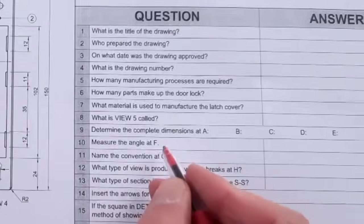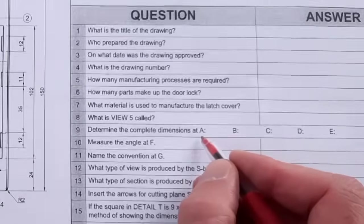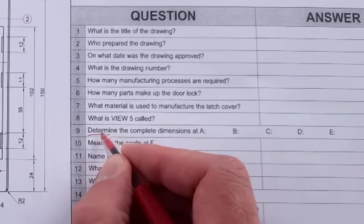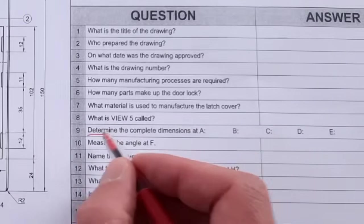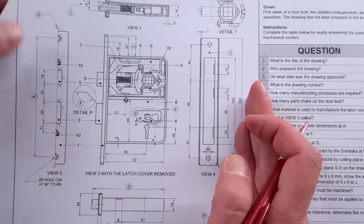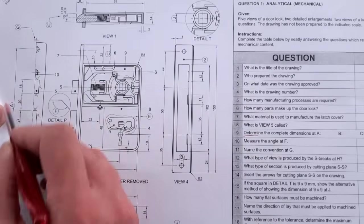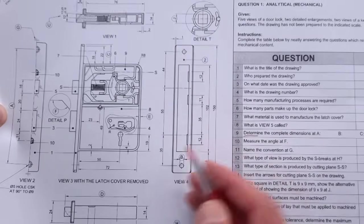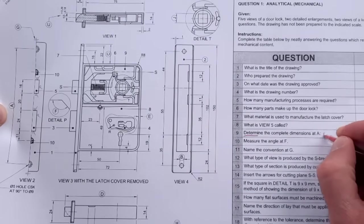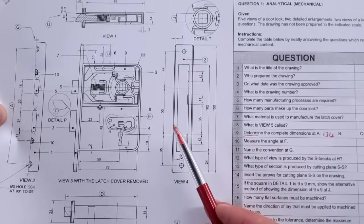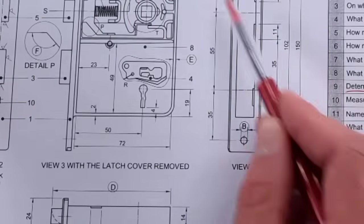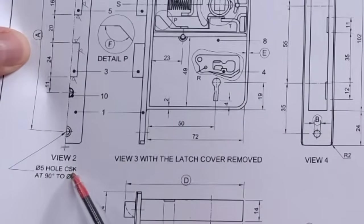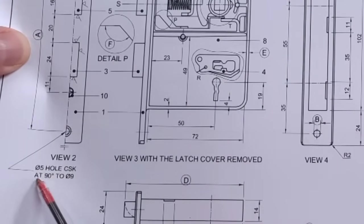Now determine the complete dimensions. Some learners then grab their rulers - do not do it. You have to determine it, not measure. Determine - in other words, you have to figure it out. And these measurements will be able, you will be able to determine. So let's look at A first of all. It's this big one. If you look at your opposite view, the right view, by adding up and doing a couple of sums, you get the total of 134. Number B - it's this one here. Now you again have to search for it. And if you look here, it actually tells you diameter 5 hole CSK, stands for countersink, sunk at 90 degrees to diameter 9. So what they're saying is this inner hole that you see here, that's the one that is diameter 5. And please, you have to have this sign to get your mark for this actual answer.